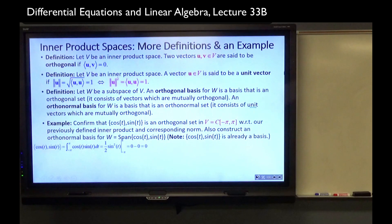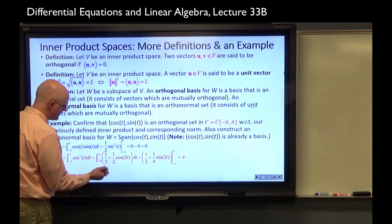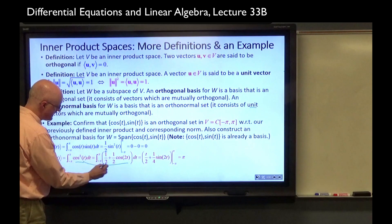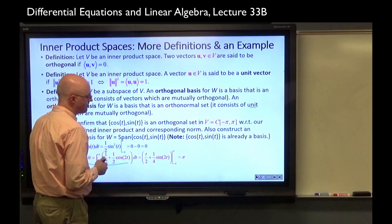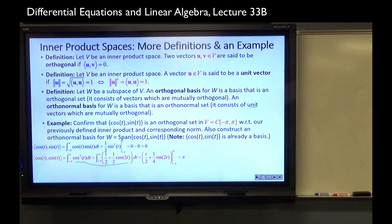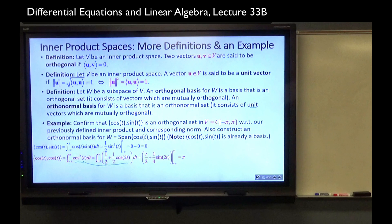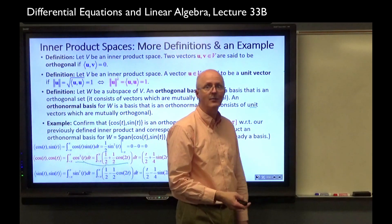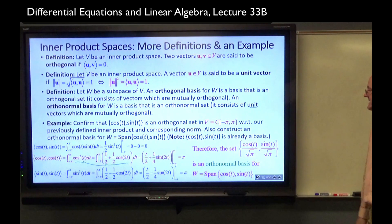How do we normalize them? Take their inner products with themselves. The inner product of cosine with itself is the integral of cos²(t). Using the trig identity cos²(t) = 1/2 + 1/2 cos(2t), when you plug in the numbers you end up with pi. The same thing happens with the inner product of sine with itself — you still end up with pi. So to normalize cosine and sine, I need to divide by the norm, which is the square root of pi. This set — cosine over root pi and sine over root pi — is an orthonormal basis for W.